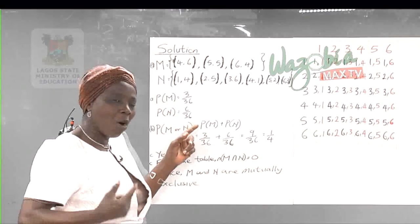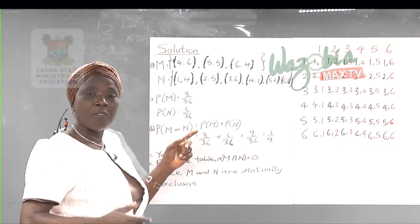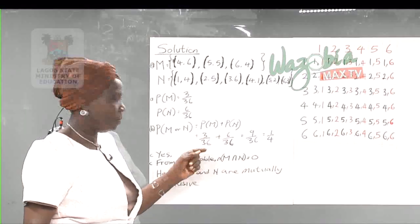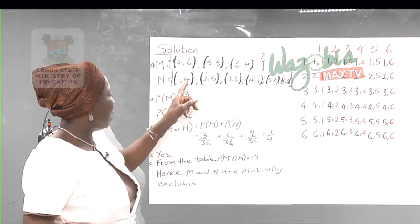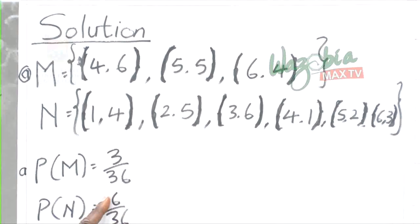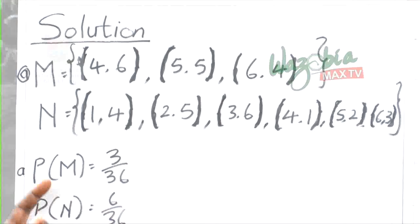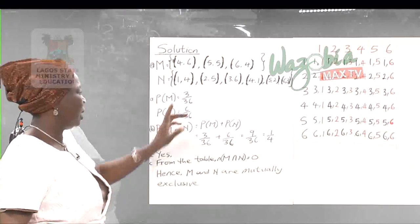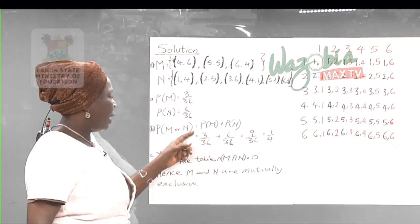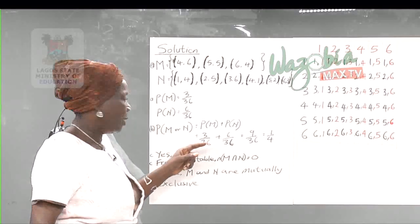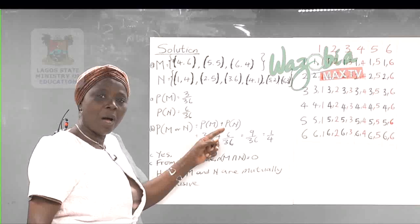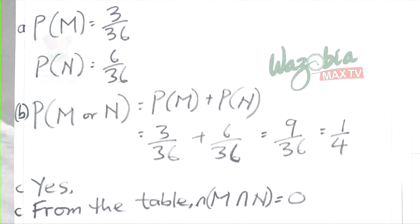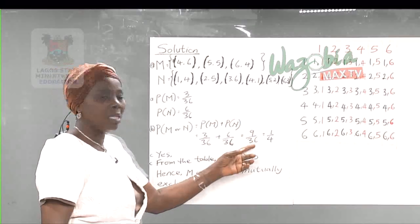Probability of N has 6 required outcomes out of 36 possible outcomes, giving 6 over 36. So the probability of M or N equals 3/36 plus 6/36. They share the same denominator, so we add the numerators: 9 over 36, which reduces to 1 over 4. Probability problems should be reduced to their lowest terms, or you can use a calculator to get the decimal form.